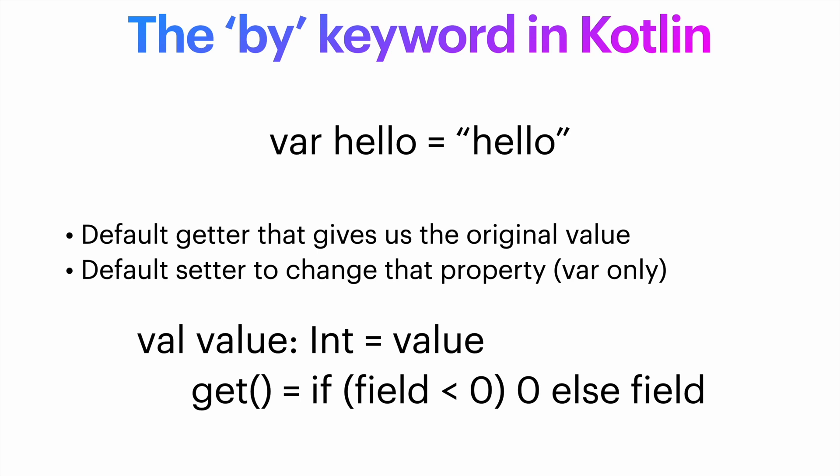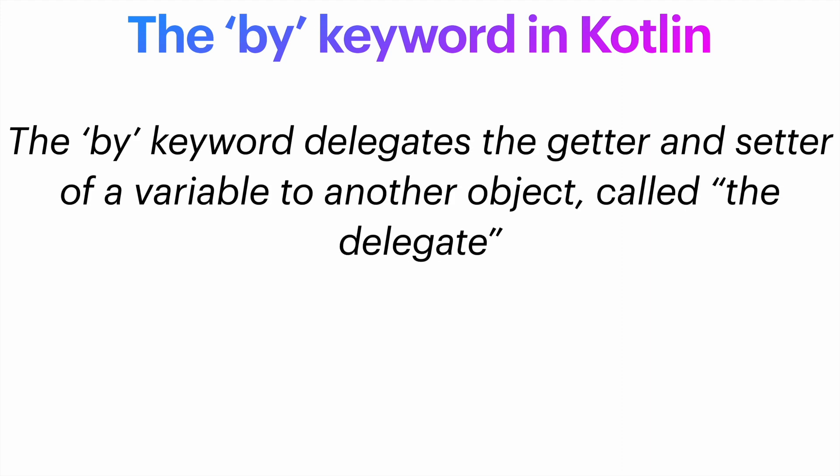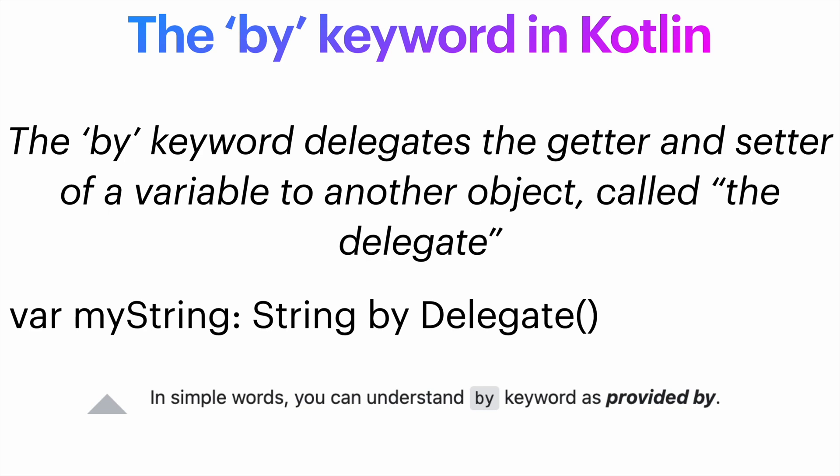With that introduction, let's see the BY keyword now. In Kotlin, we can use the BY keyword to delegate the getter and setter of a property to another object that we call the delegate. So basically, when we write var myString of type String and we say BY delegate, we basically override the getter and setter of myString with a delegate object. You can think of the word BY as: myString will now be provided BY the delegate, as very beautifully mentioned in this Stack Overflow comment.